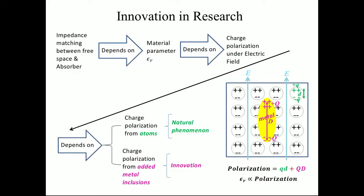Innovation in Research: Impedance matching between free space and absorber depends on your material parameter, or epsilon r, depends on charge polarization under electric field, and also depends on charge polarization of atoms, which is your natural phenomenon, and charge polarization from added metal inclusions, which is innovation.